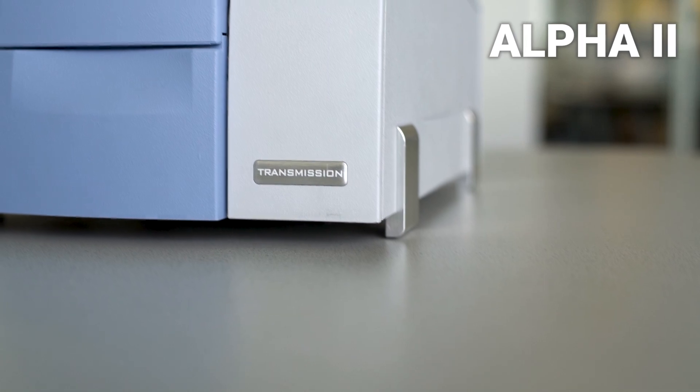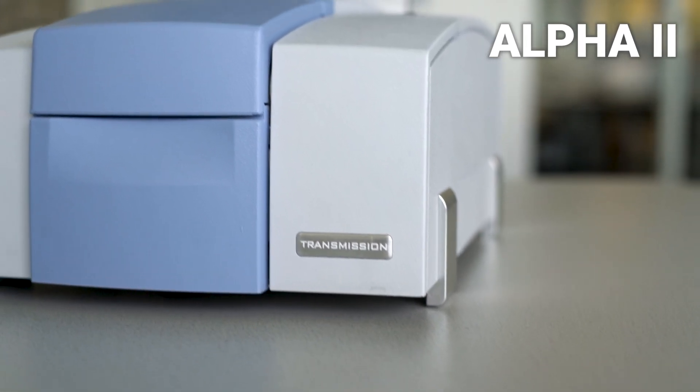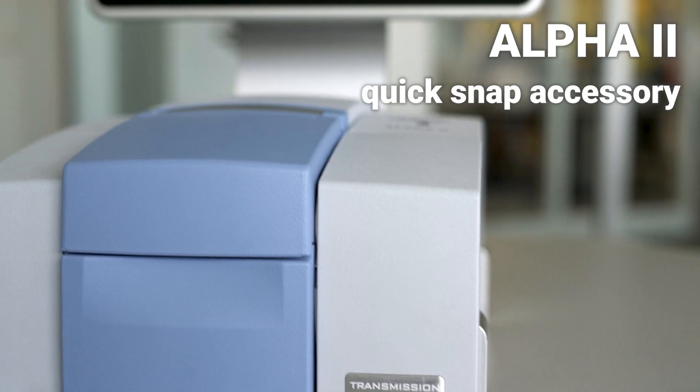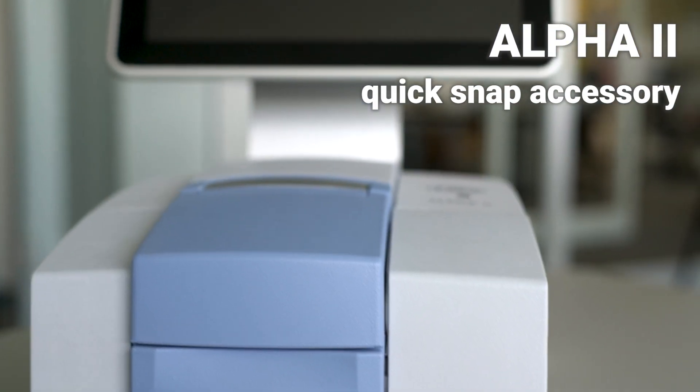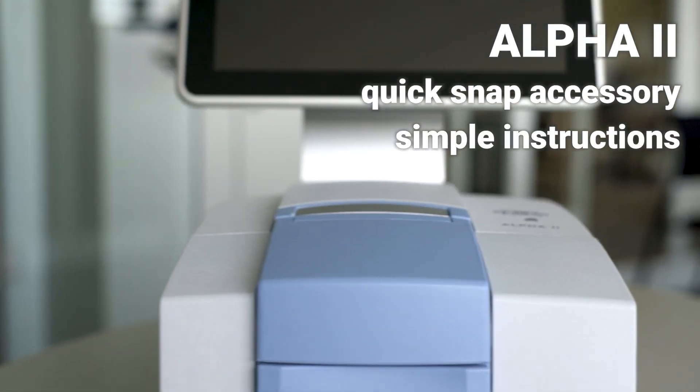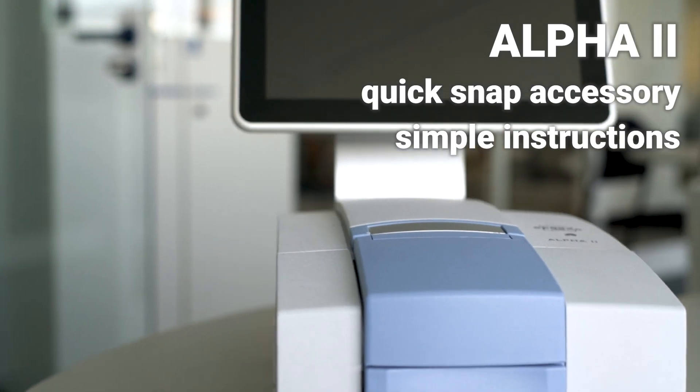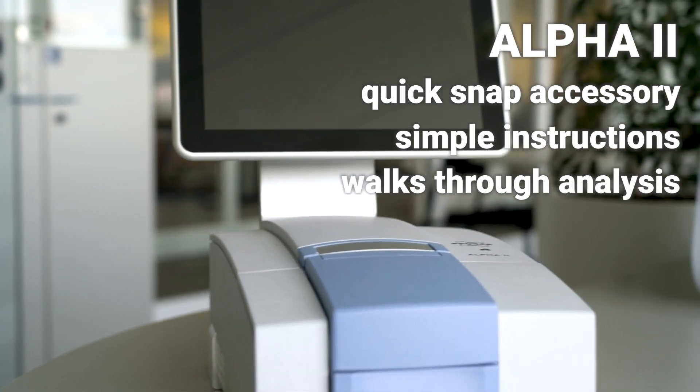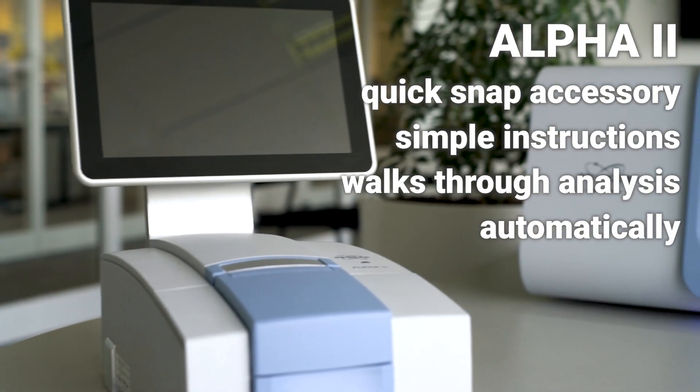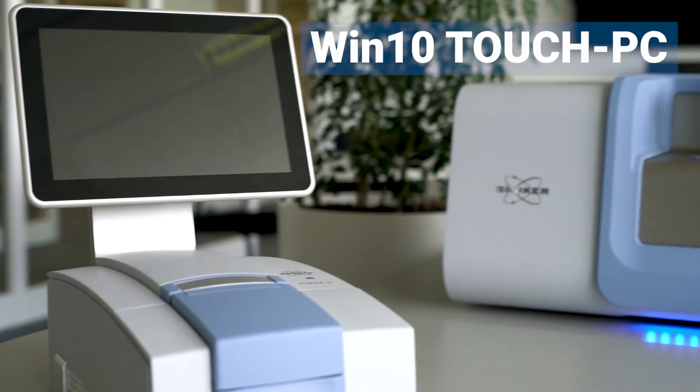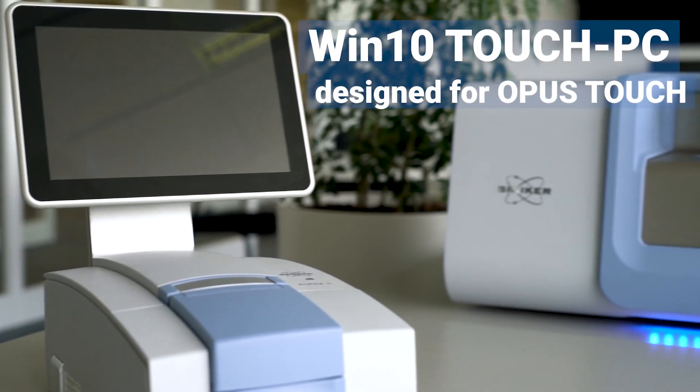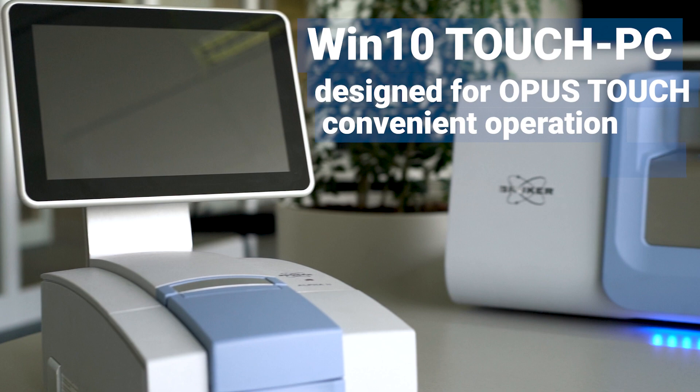The Alpha 2 spectrometer is already set up with the correct QuickSnap accessory for transmission measurement. Now you must only follow the simple instructions provided by the OPUS Touch software. It walks you through the analysis and automatically sets all IR parameters. If you are using the optional touch PC, analysis gets even more convenient and saves a lot of space.